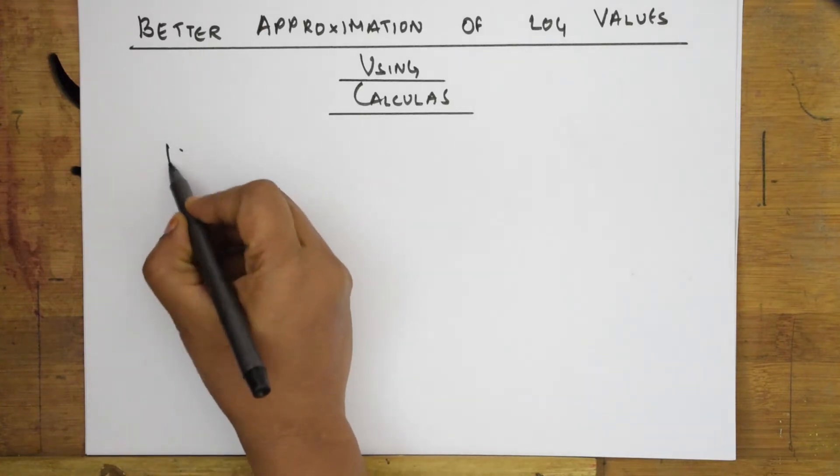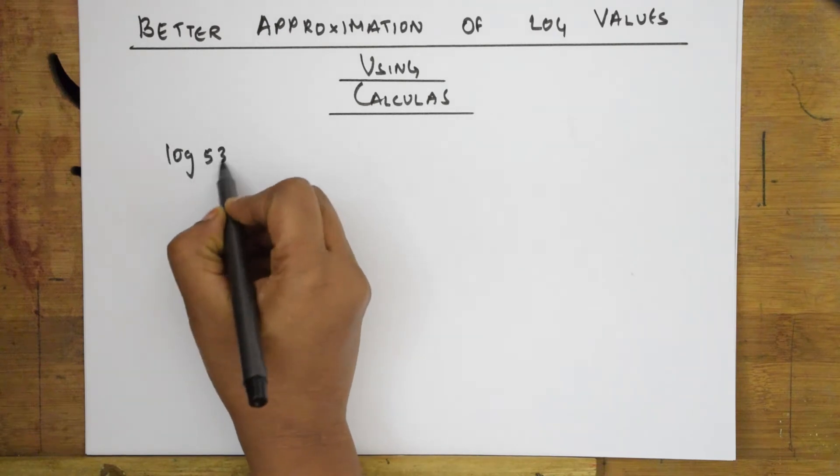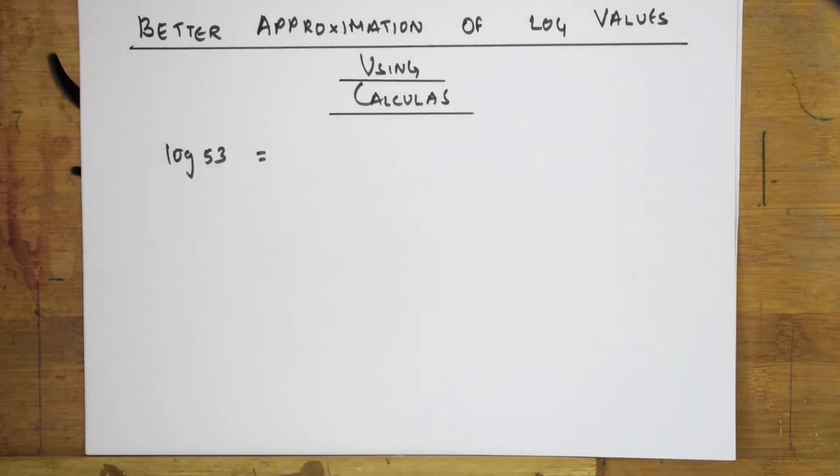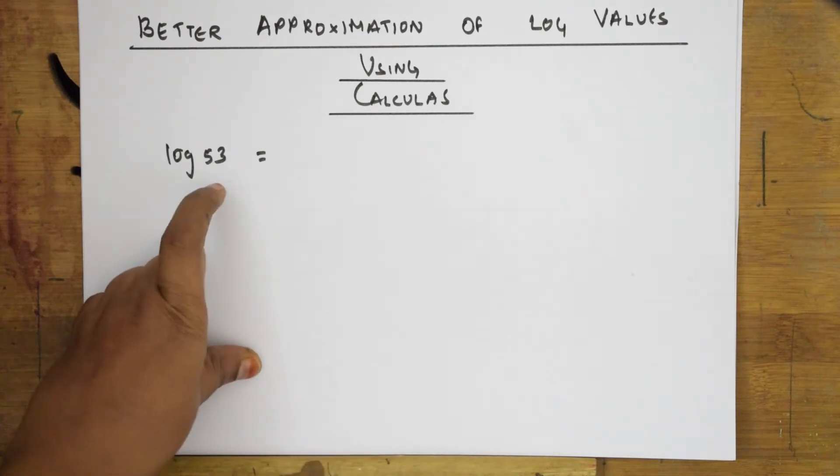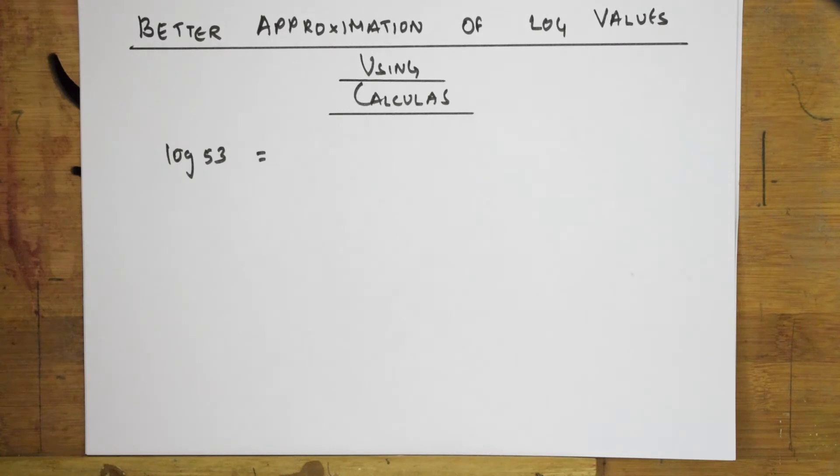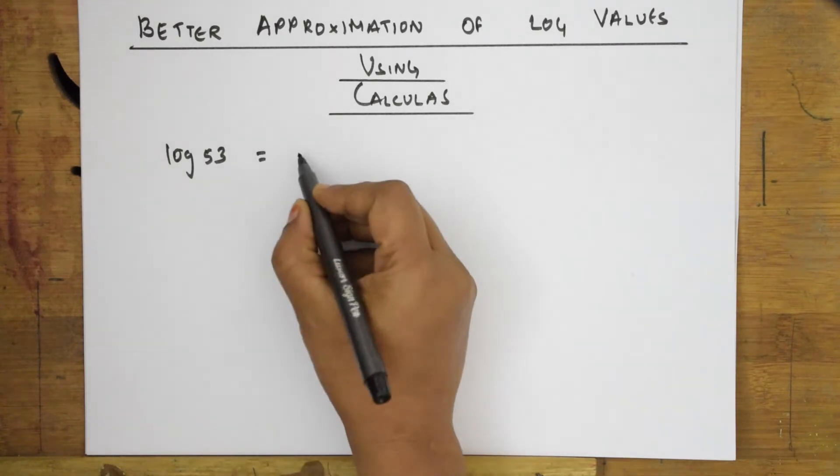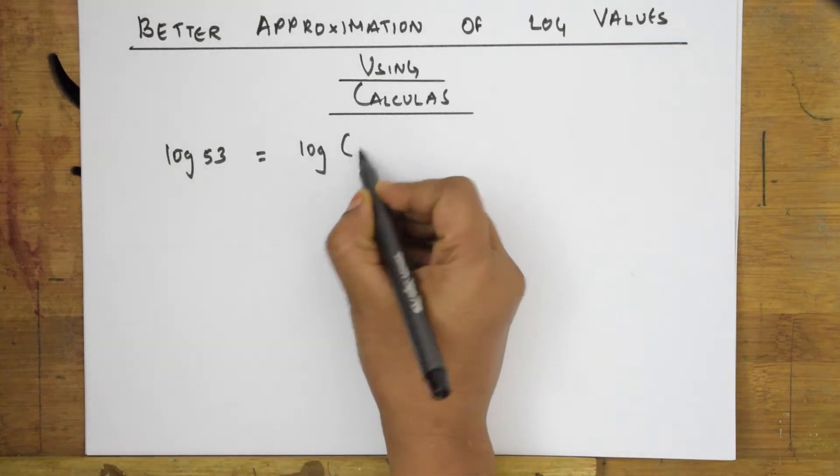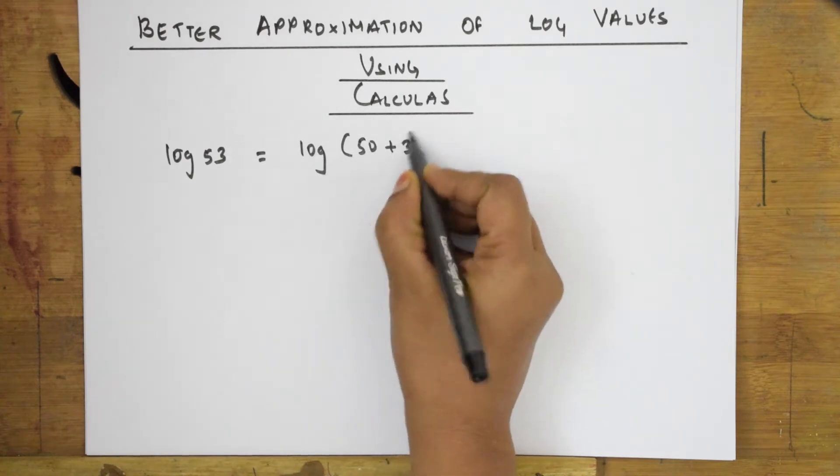Suppose in the exam, they have given you log 53. Like in previous videos, I asked you to remember log 2 value, log 3 value, log 5, log 7 value. I also showed you the value of log 10, log 100, log 1000. If normal numbers are given to us, I can easily operate. But suppose such numbers are given to us like 53, how to find the log? First of all, log 53 can be written as log (50 + 3).